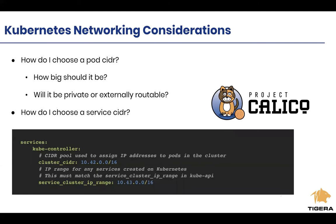Starting with the service CIDR: it's not managed at all by the CNI because it's a virtual CIDR managed purely by Kubernetes itself — the kube-API server. Therefore choosing a service CIDR, you need to provide something that allows you to scale with the number of services you intend to have. A /16 should give you more than 65,000 addresses, which is probably more than you'll ever run. It needs to be non-conflicting with the pod CIDR, but handing service VIPs to services is not the CNI's responsibility — not even a configuration option for Calico or any other CNI.